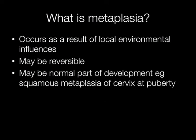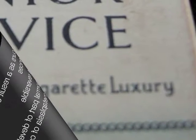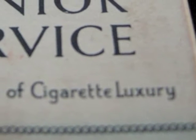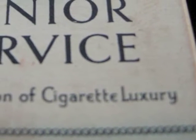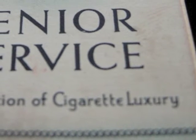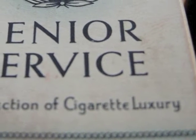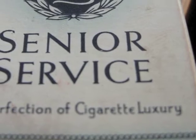Metaplasia is caused by local environmental influences on the tissue and it may be reversible. Occasionally it may be part of normal development, for example squamous metaplasia of the cervix occurring at puberty. A really good example of a local environmental influence is the effect of cigarette smoke on the epithelium of the bronchi.